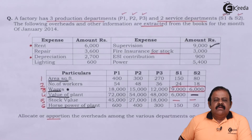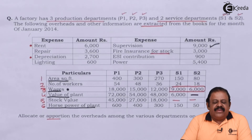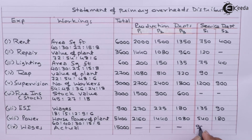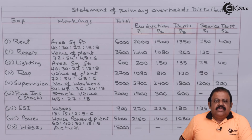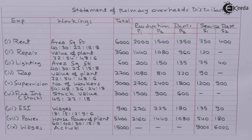We are required to consider only service department wages — 9000 and 6000 — because direct wages of service departments should be treated as overheads, whereas wages of production departments should not. Wages of service department 1 and 2 total 15000 and are allocated on an actual basis — 9000 and 6000 respectively. We have now recorded all expenses and will be taking the total.